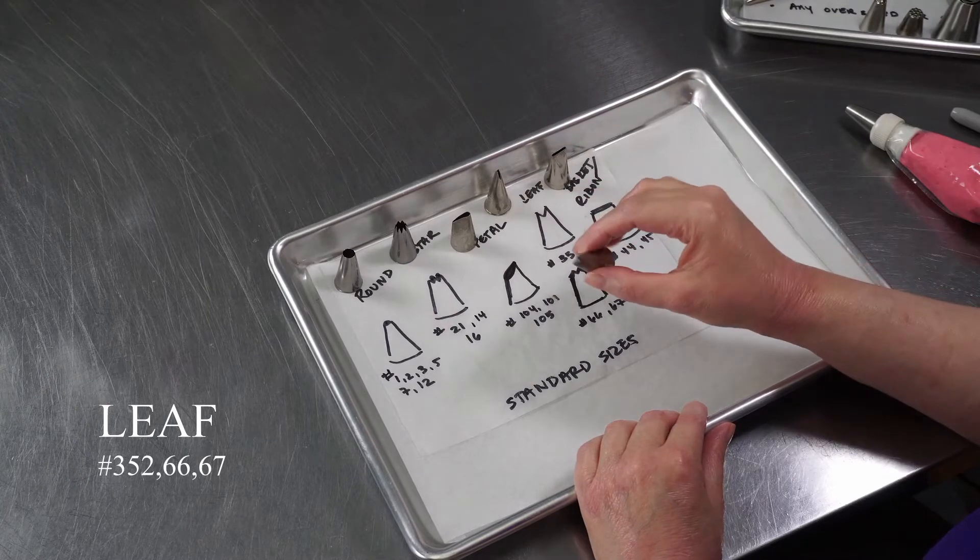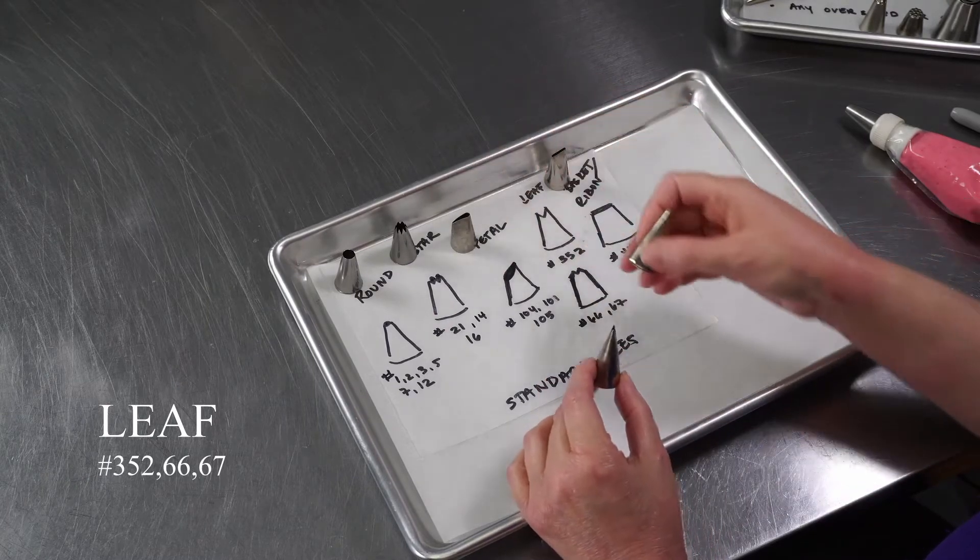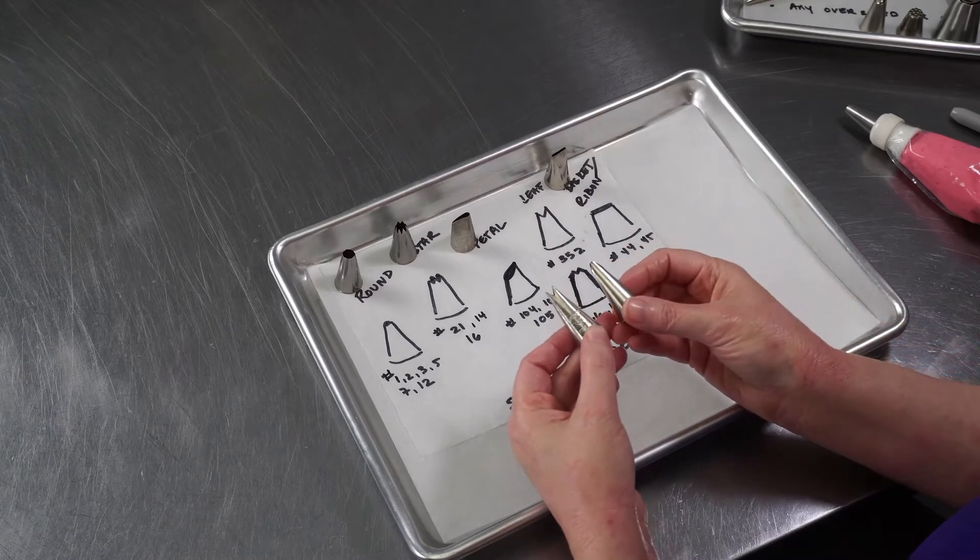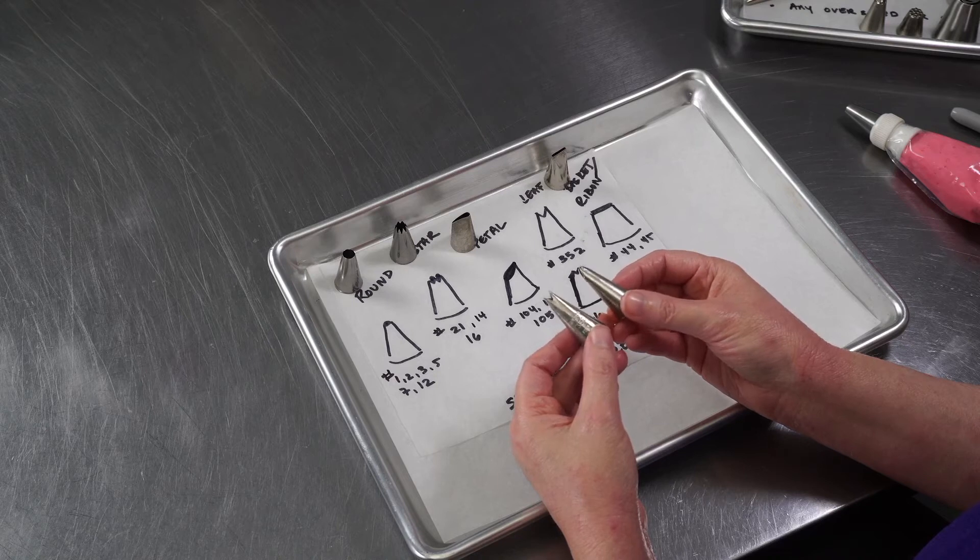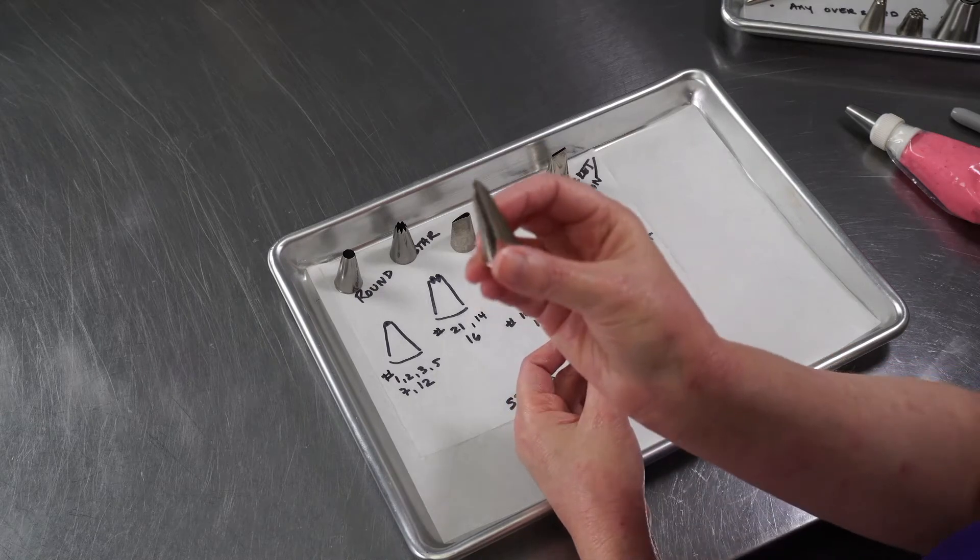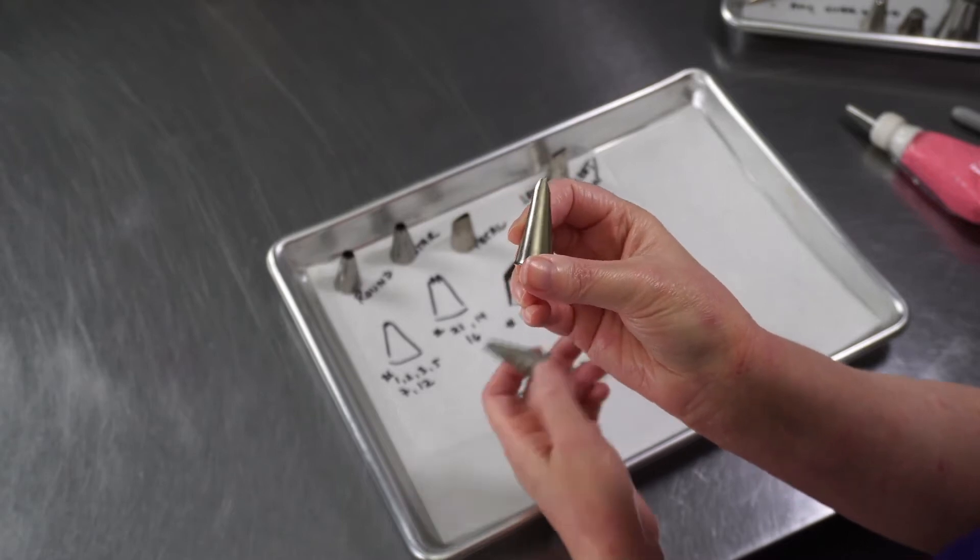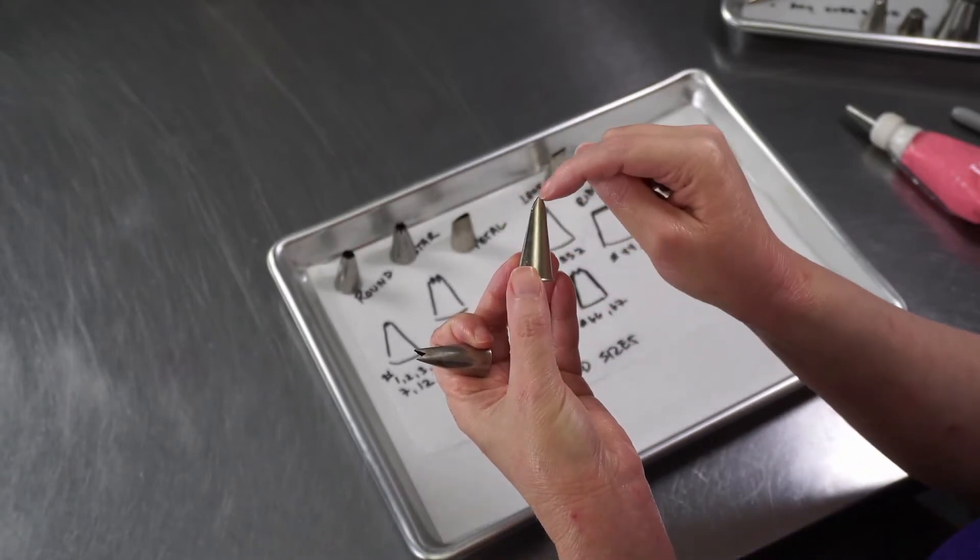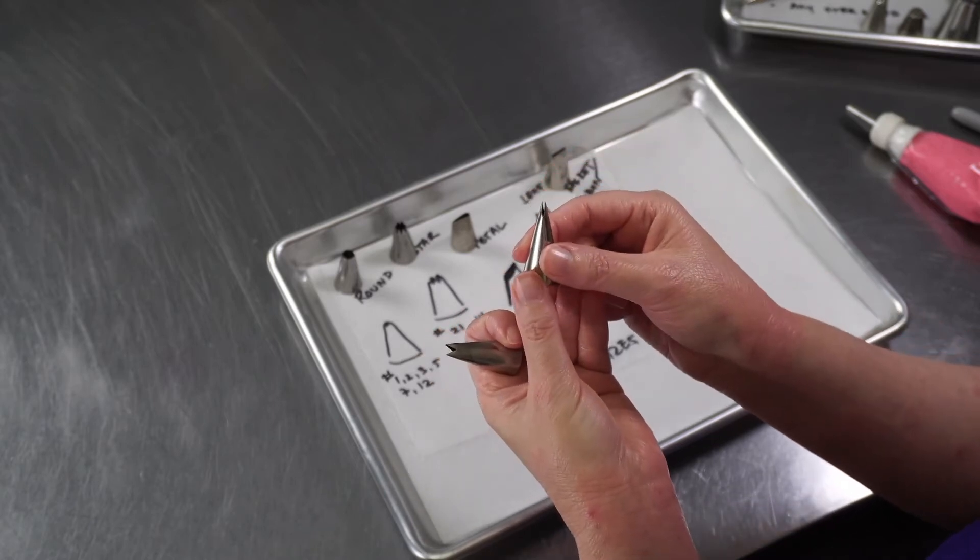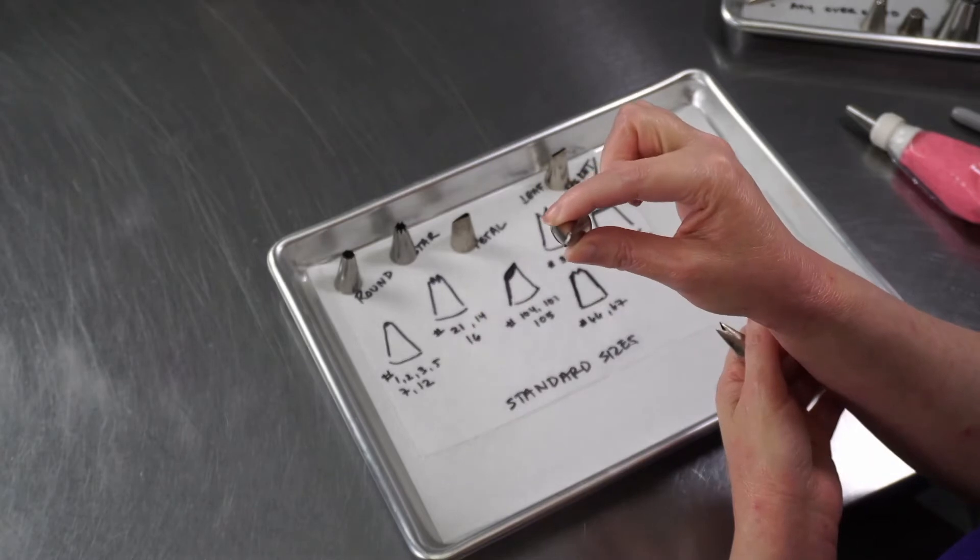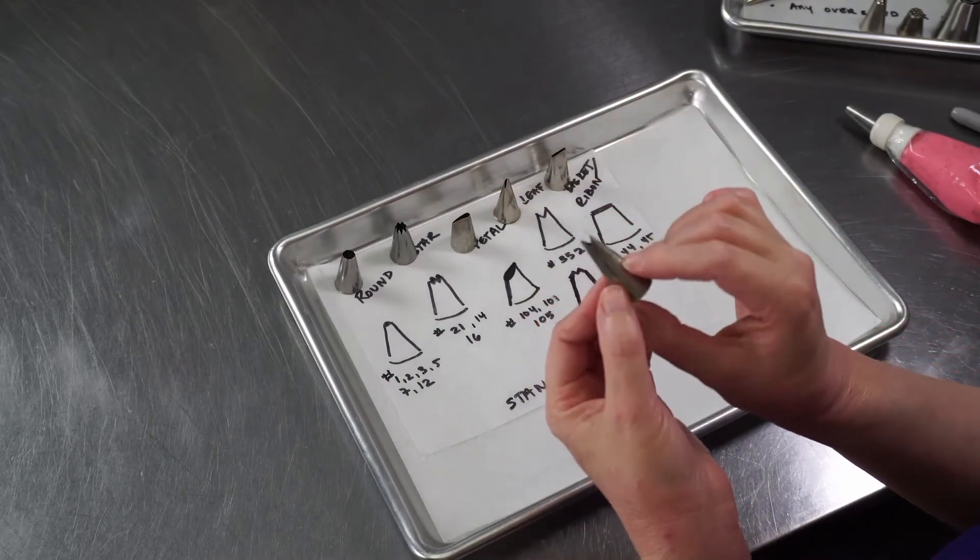Then there are your leaf tips. There's two different styles. I'm just going to talk a little about those. You can use either one. They give you the same finished look, it's just a slightly different opening to achieve it. The first one is shaped like a W. You can see it has a little notch in the top, and then it has a nice slit style opening.